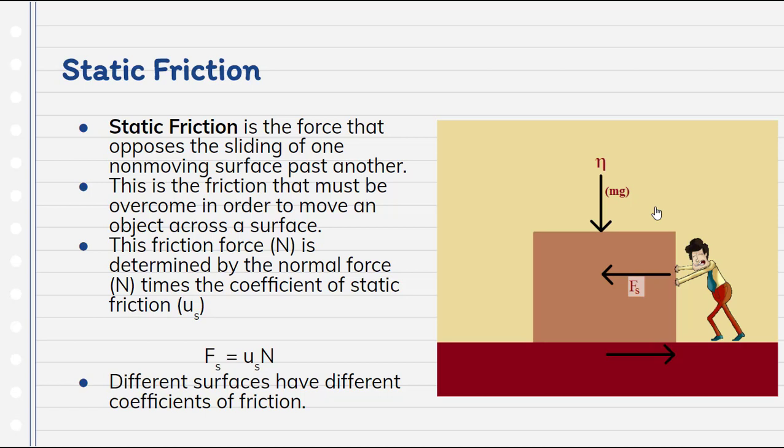Now different surfaces have different coefficients of friction, just like what we talked about previously. But typically, the static coefficient of friction is greater than that of the kinetic coefficient of friction, simply because the object is non-moving. So it's going to require more force to get it to move, rather than to keep an object moving. Let's move on.